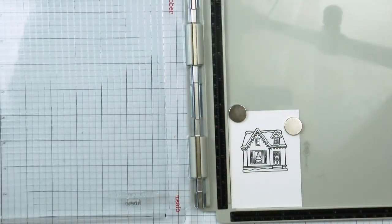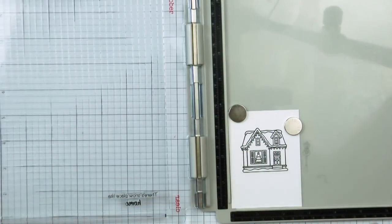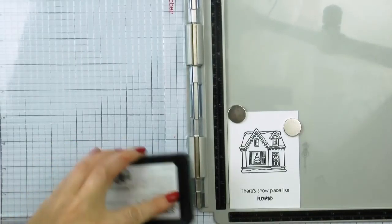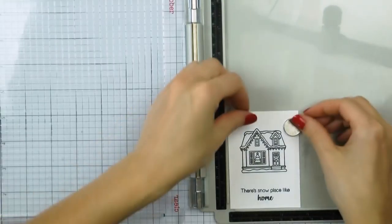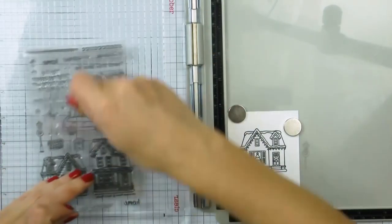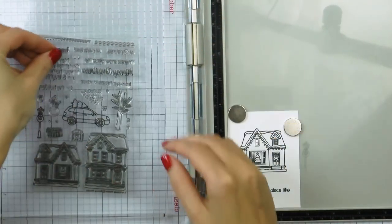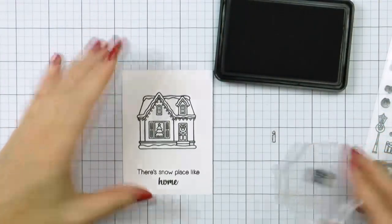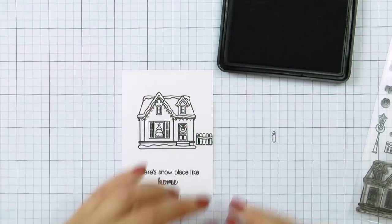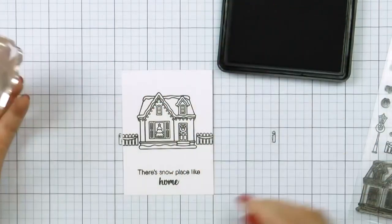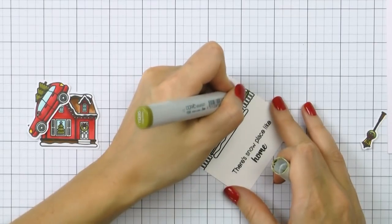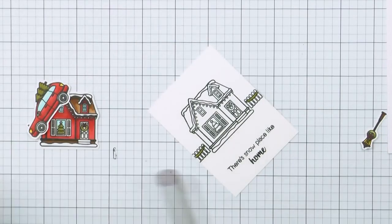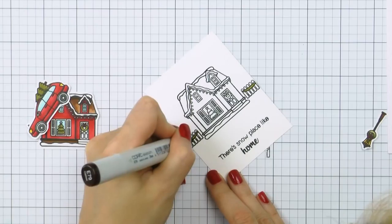Next I grabbed another piece of cardstock, this is Neenah Solar White 110 pound this time. I stamped another house. I'll need it to later be able to stamp a fence next to it, and I stamped a sentiment that reads There's Snow Place Like Home. I'm also adding the fence on both sides of the house and I'm stamping it in Intense Black ink. I did not use my stamp positioner here as this image is small and I pretty much was sure that I wouldn't have any problems stamping it.